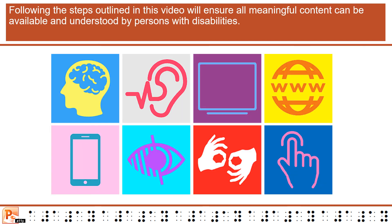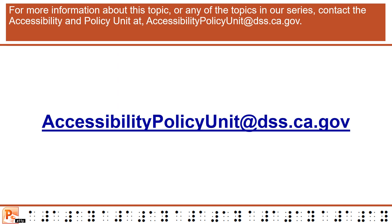Following the steps outlined in this video will ensure all meaningful content can be available and understood by persons with disabilities. For more information about this topic or any of the topics in our series, contact the Accessibility and Policy Unit at accessibilitypolicyunit@dss.ca.gov.